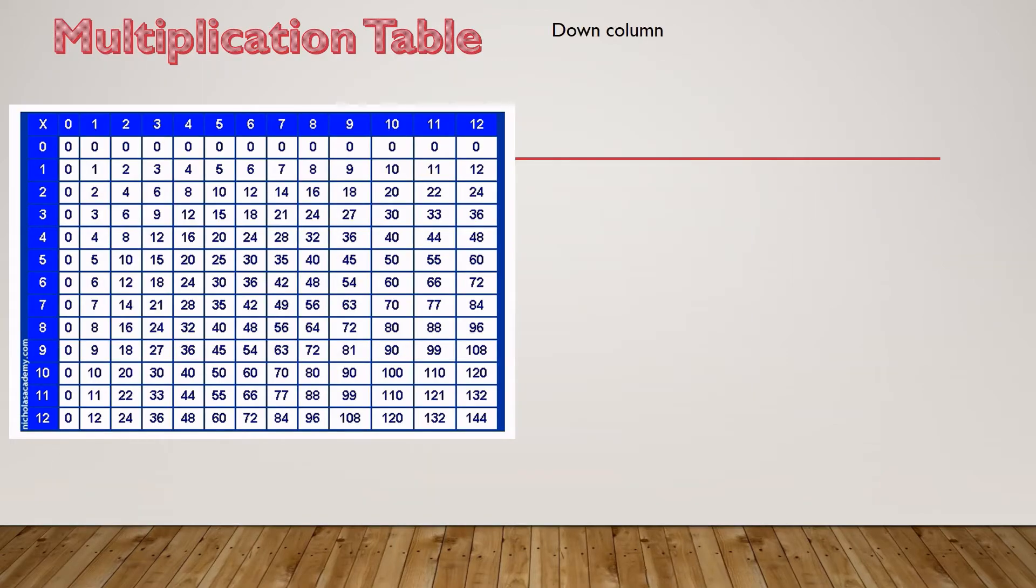So let's look at going down columns. So I picked 6 and I highlighted it. And so we have 0, 6, 12, 18, 24, 30, 36, 42, 48, 54, 60, 66, 72. And can you see a pattern? And let's start at 0. From 0 to 6, we are increasing by 6. 6 to 12, increasing by 6. 12 plus 6 is 18. 18 plus 6 is 24. So as we go down this column, we are increasing by 6.